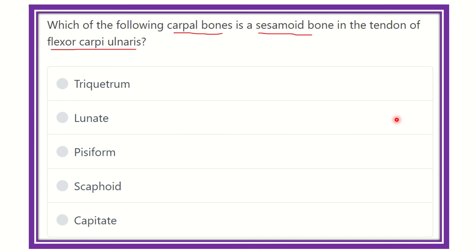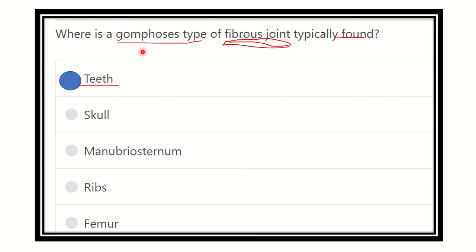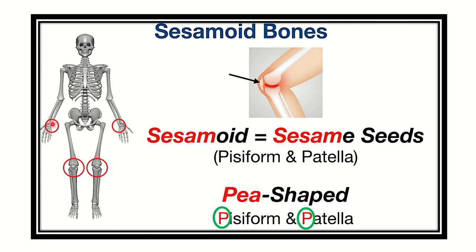In the question, they want to know about the flexor carpi ulnaris tendon, which means we are looking at the ulnar side. There is a sesamoid bone on the ulnar side - the ulnar side carpal bones are the pisiform and hamate bone. The pisiform is located on the ulnar side and it is one of the sesamoid bones. We can see the flexor carpi ulnaris muscle located at this point, so the pisiform bone is located in the flexor carpi ulnaris tendon.